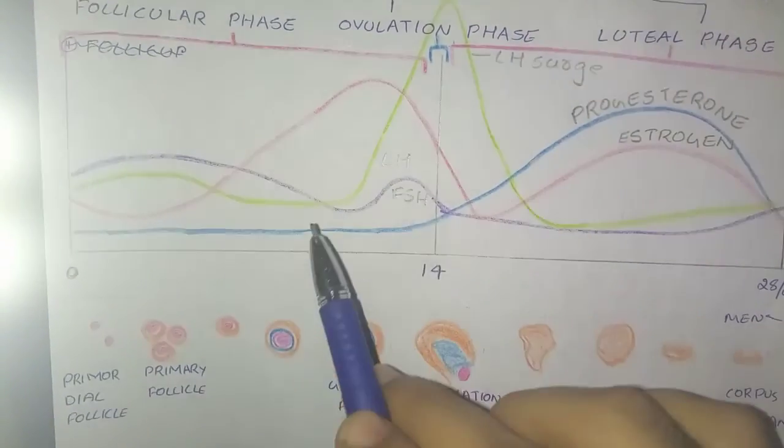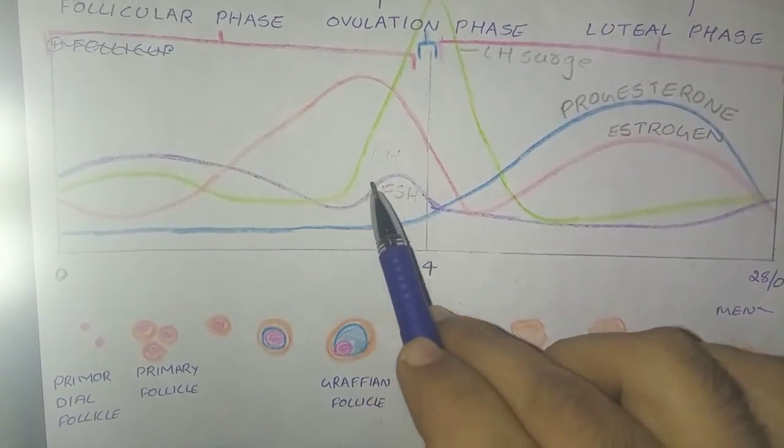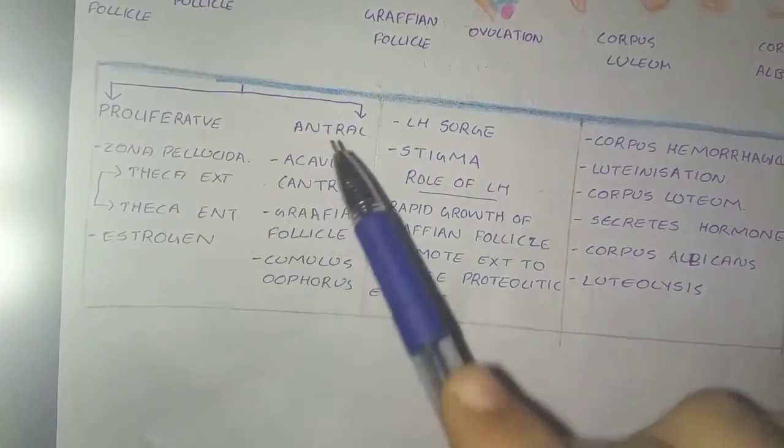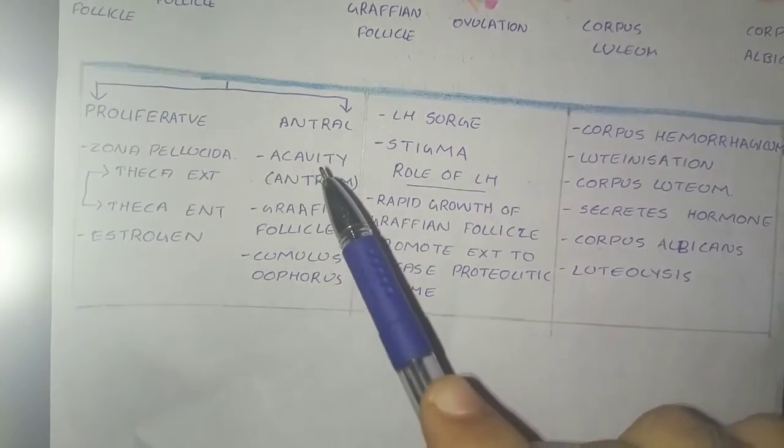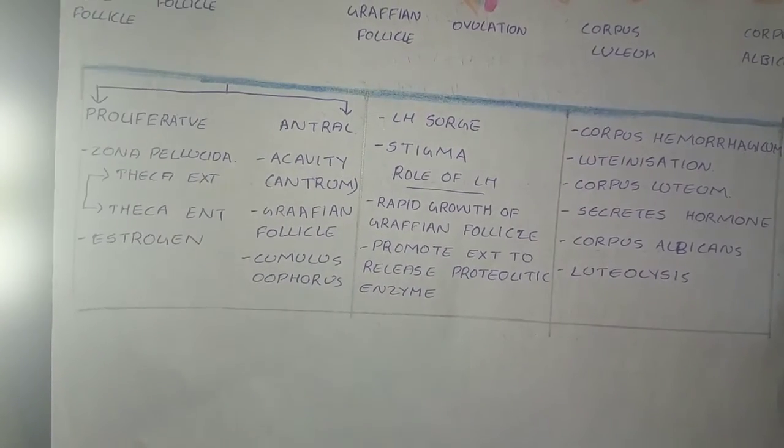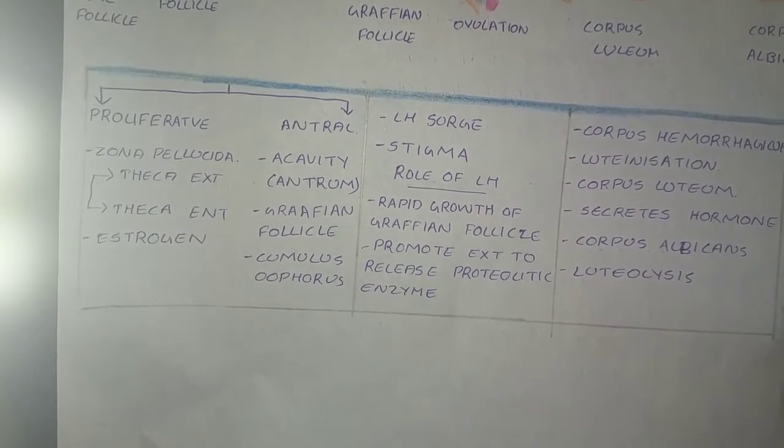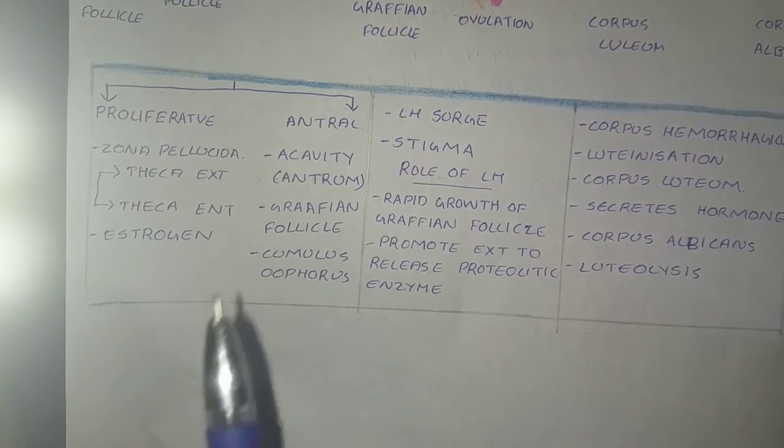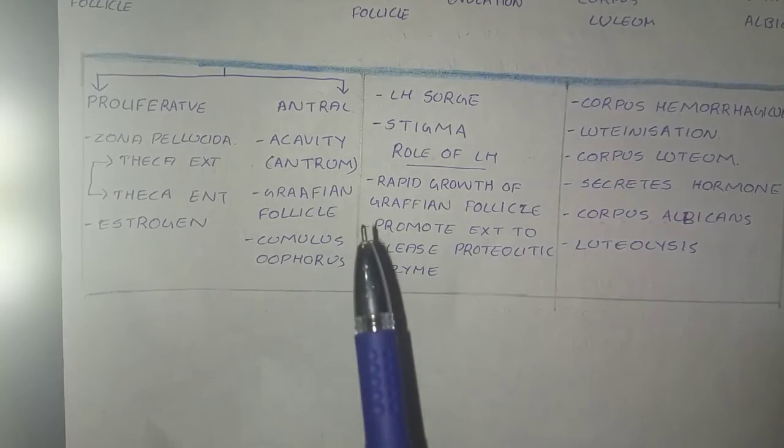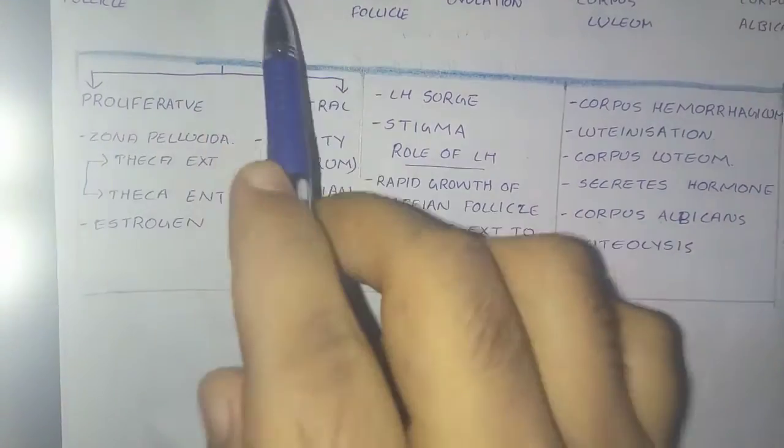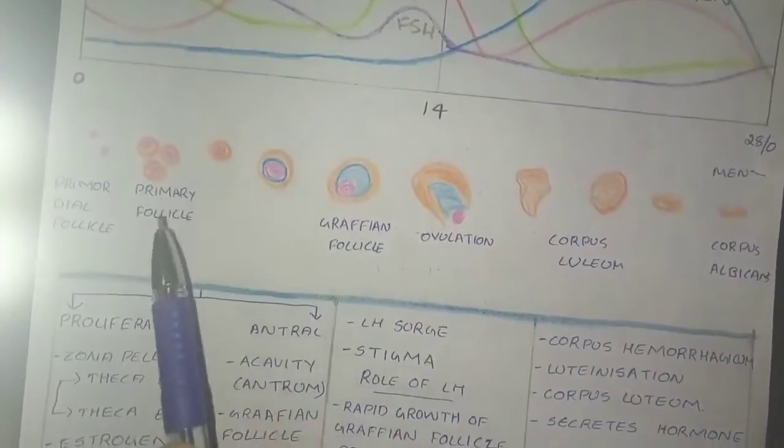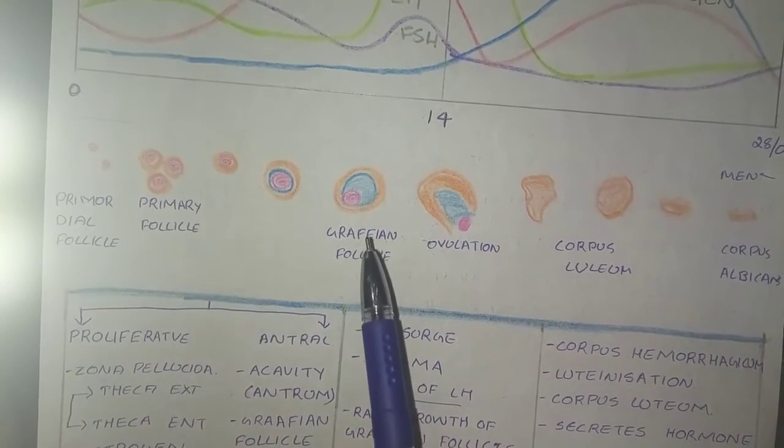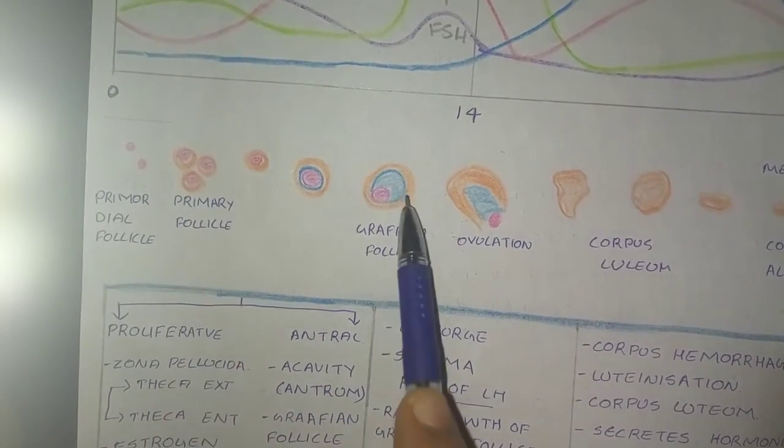But at high concentration, just look at here, it goes an increase in the FSH and LH, which is also shown here. Now for the antral phase, a cavity is formed which is known as antrum. In the antrum there's a filling of fluid known as liquor folliculi, and thus occurs the change from primary follicle to Graafian follicle, which is shown here.